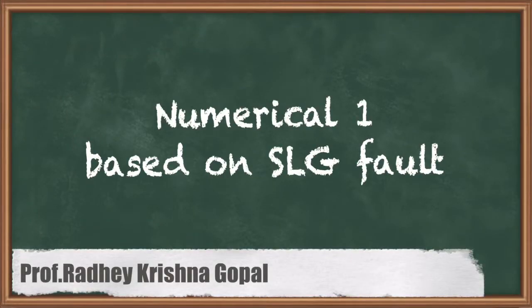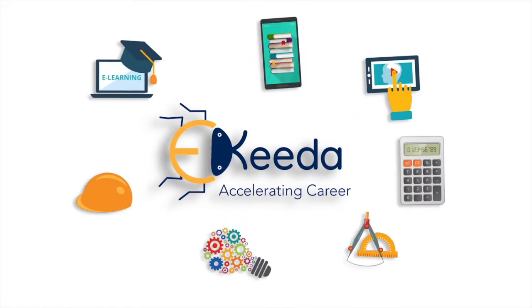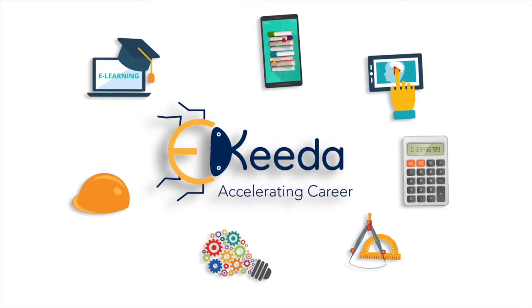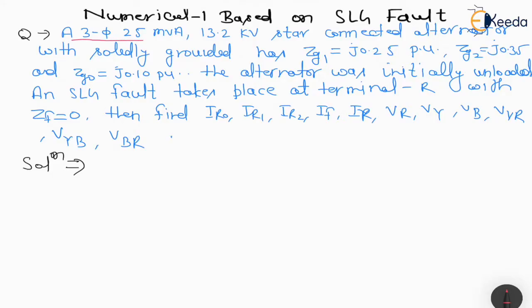Hello friends. Now we are going to solve numerical 1 based on SLG fault. The question is: a three-phase 25 MVA, 13.2 KV star-connected alternator with solidly grounded neutral (Zn = 0) has Zg1 = J0.25, Zg2 = J0.35, and Zg0 = J0.10 per unit. The alternator was initially unloaded, and an SLG fault takes place at terminal R with Zf = 0.